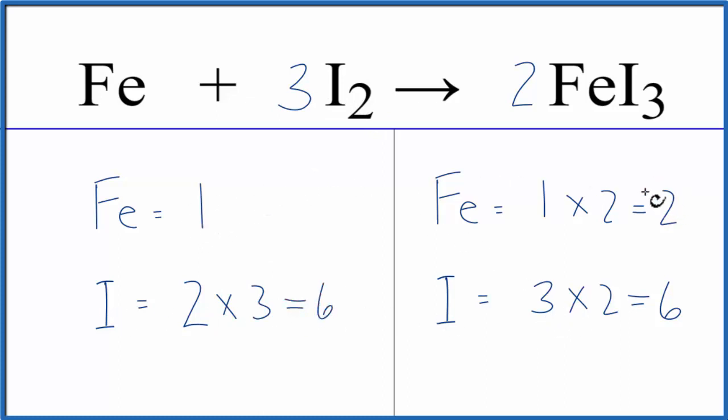To fix the iron, I have 2 here and 1 here. Put a coefficient of 2 in front. 1 times the 2, that gives me 2. And those are balanced.